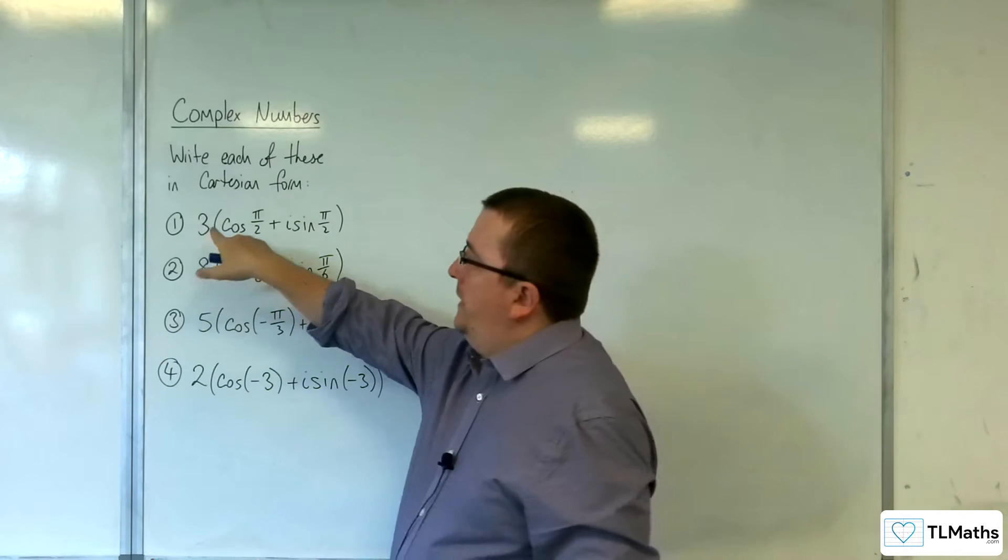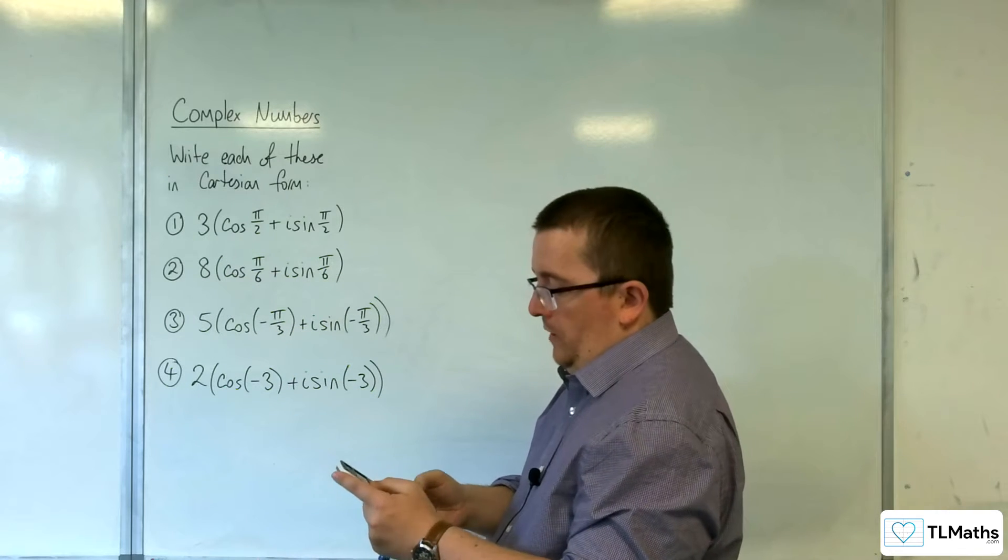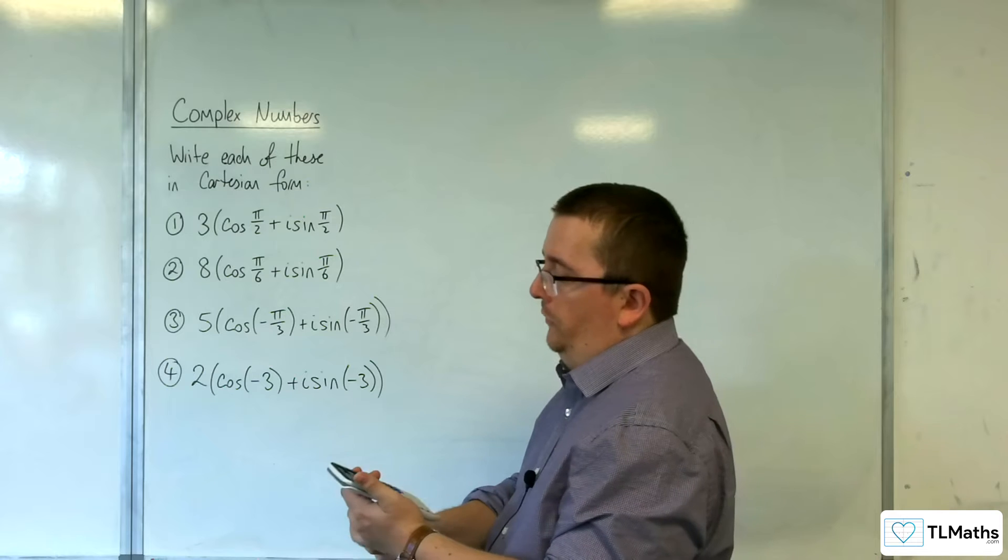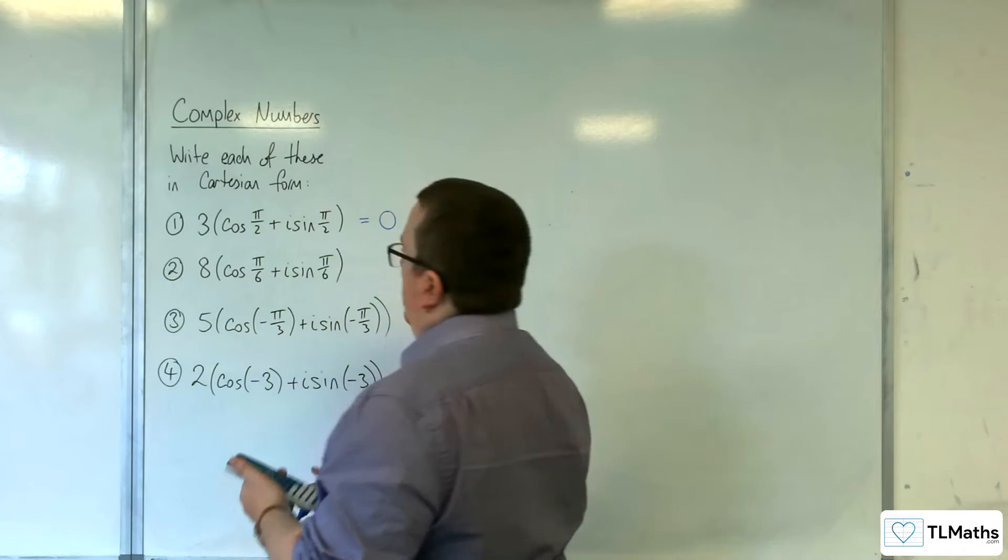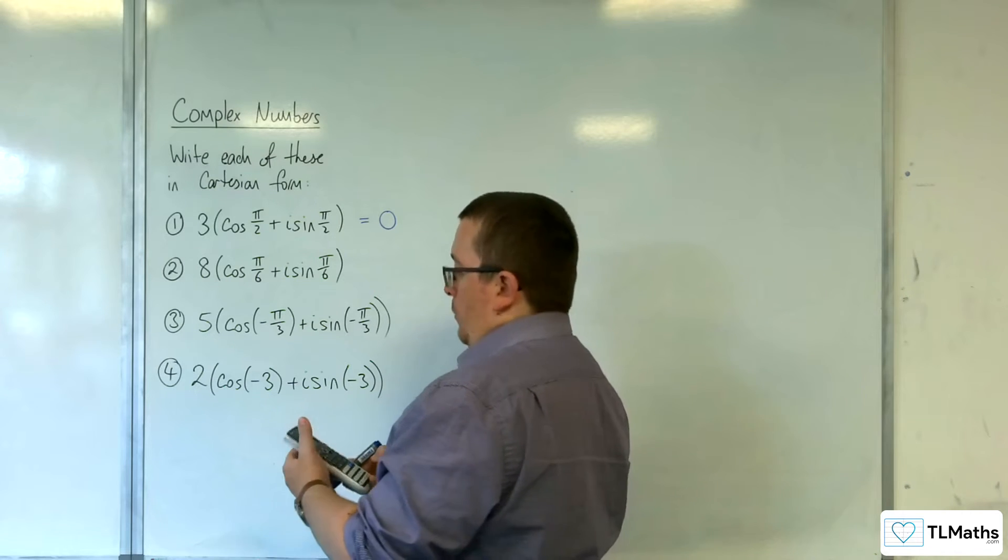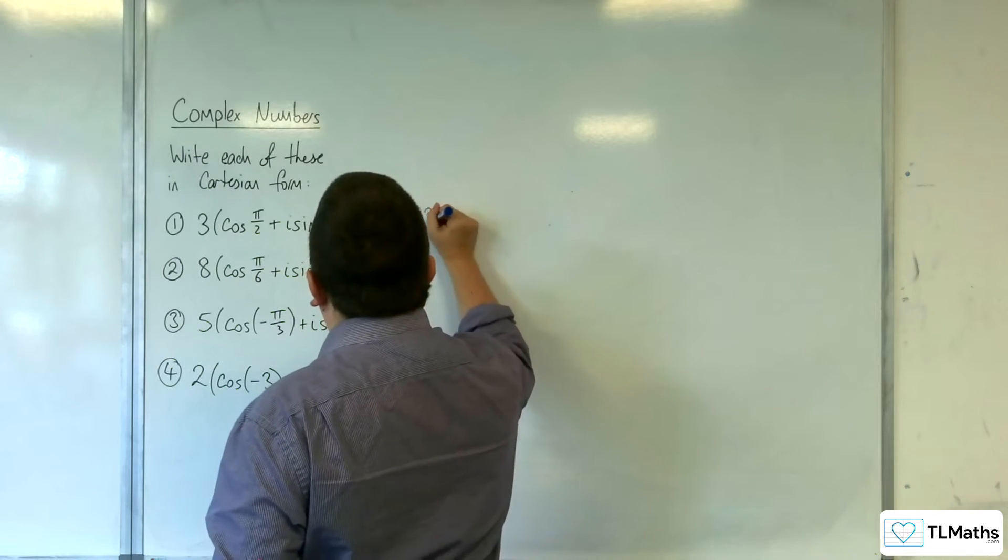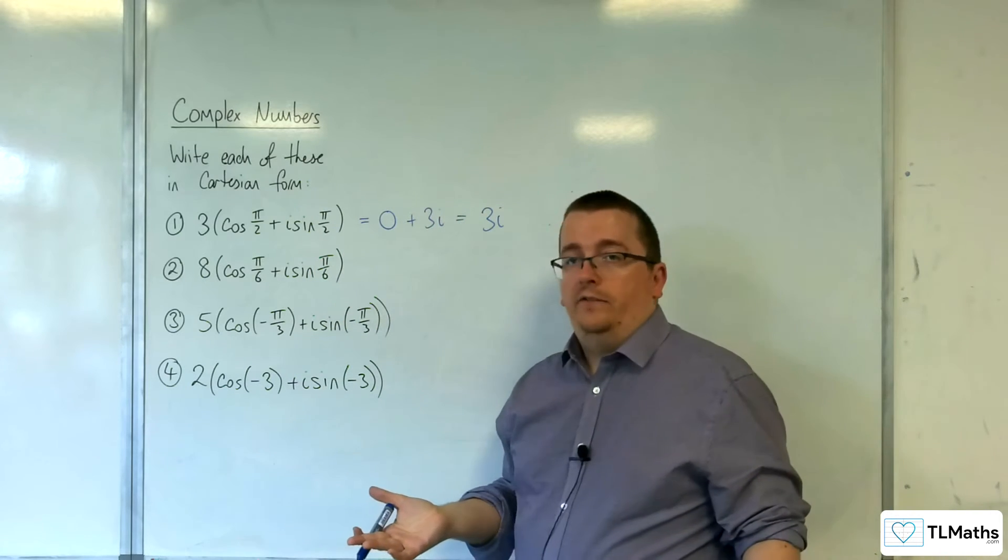So all I need to do is just do 3 lots of cosine of pi over 2. So 3 lots of cosine pi over 2. Make sure your calculator is in radians, of course. And you get 0. And then you've got 3 lots of sine of pi over 2, which is 3. So it's just 3i for that first one.